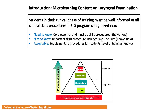Students in their clinical phase, or in the medical sciences phase of training, must be well informed of all clinical skills procedures in the undergraduate program. These are categorized into need-to-know, nice-to-know, and acceptable-to-know skills procedures, understood at clinical competency levels of Miller's pyramid of knows, knows-how, and shows-how respectively.